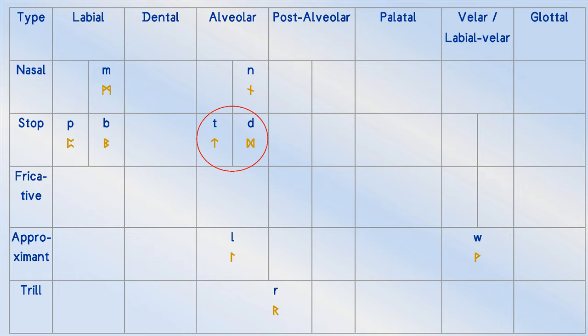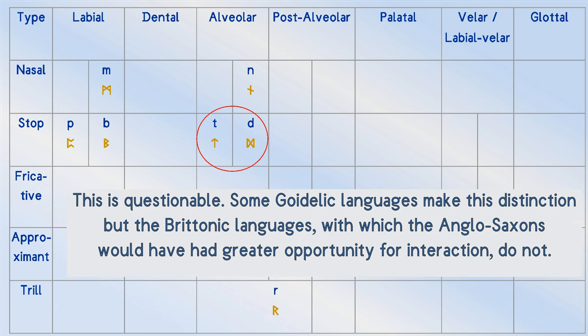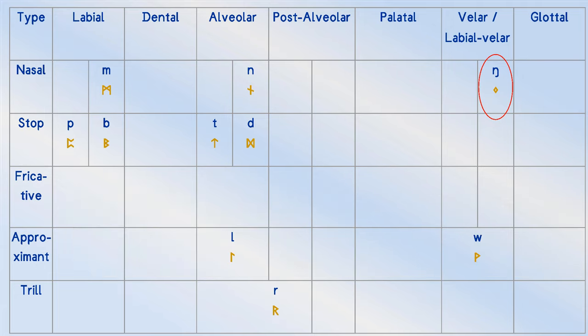Possibly under Celtic influence, T and D moved from being dentals to alveolars, but they were still written the same way anyway. However, it would seem the Anglo-Saxons' liberal use of N at the end of words made runemasters think that an undersized rune for it was unbefitting. Consequently, they enlarged it to match the other runes.